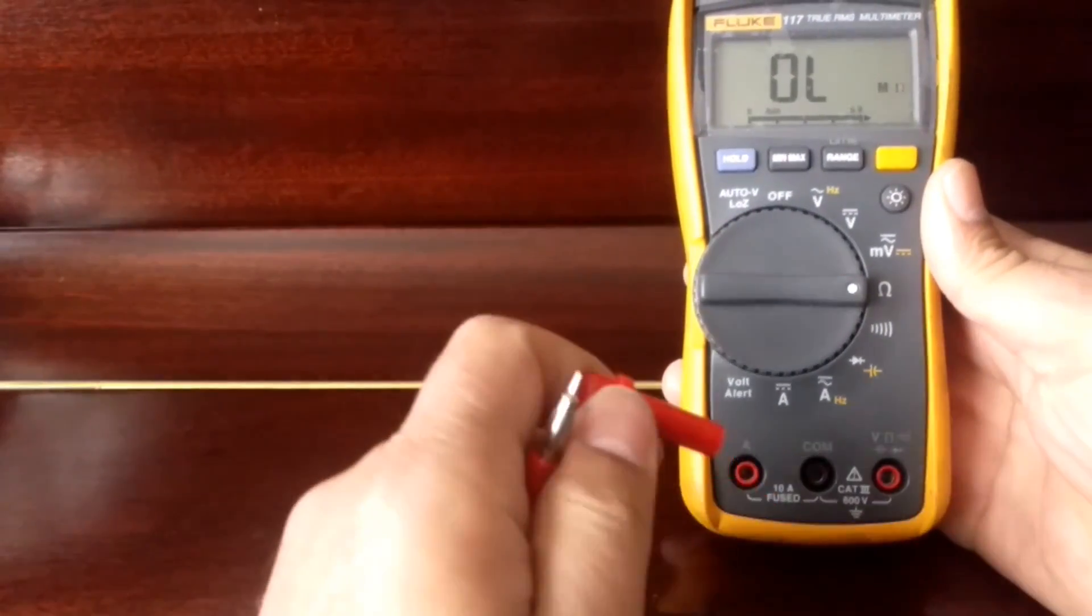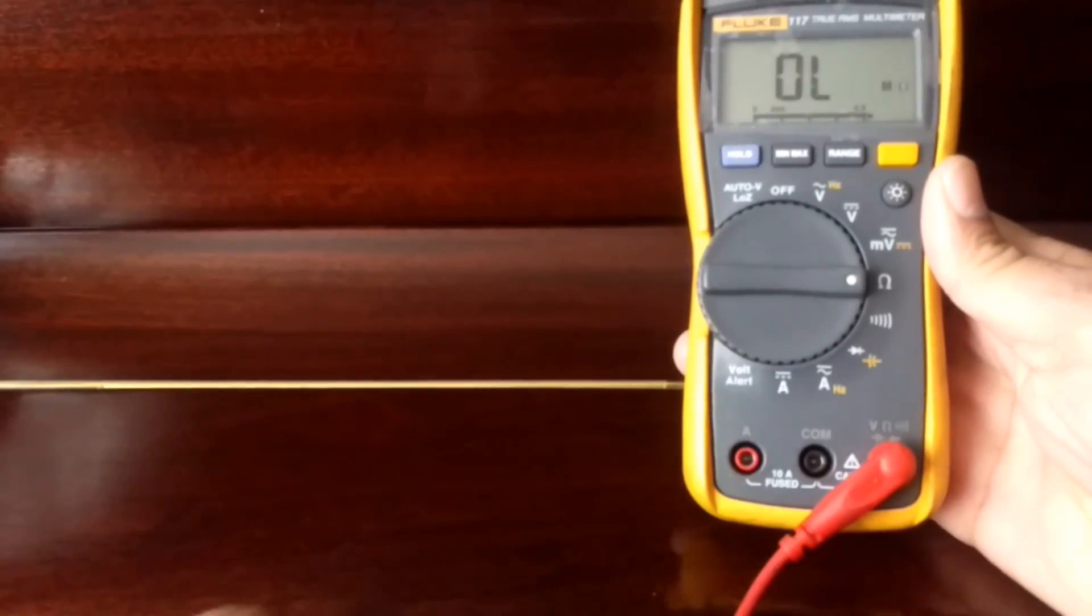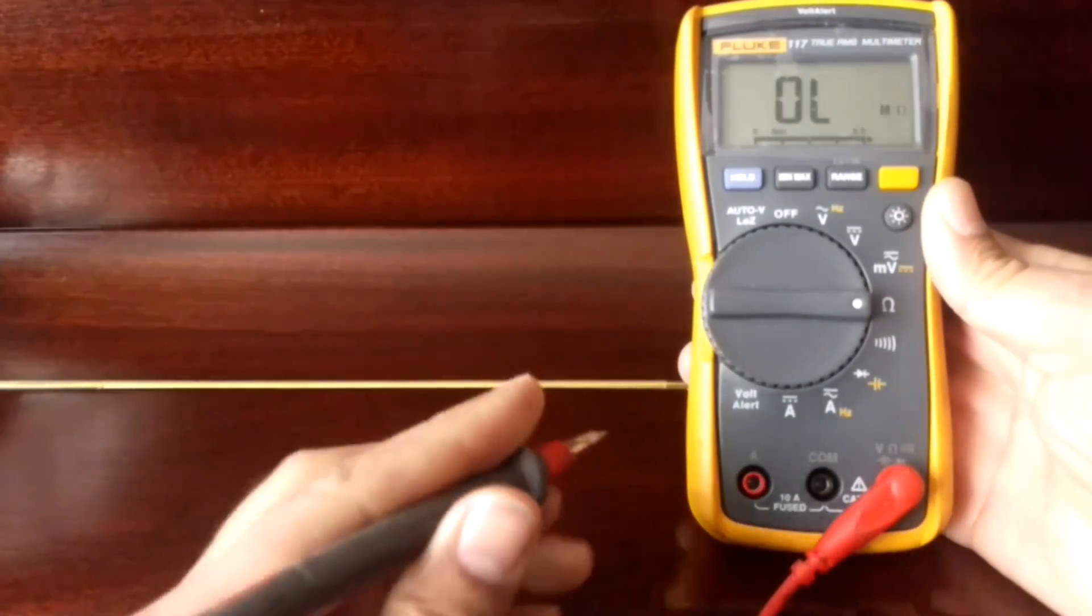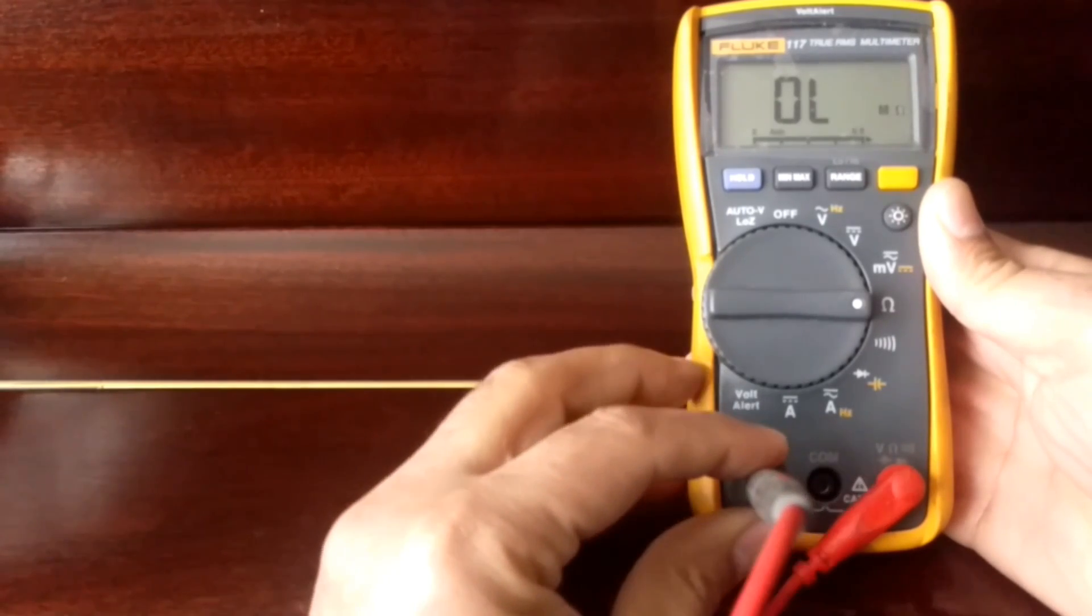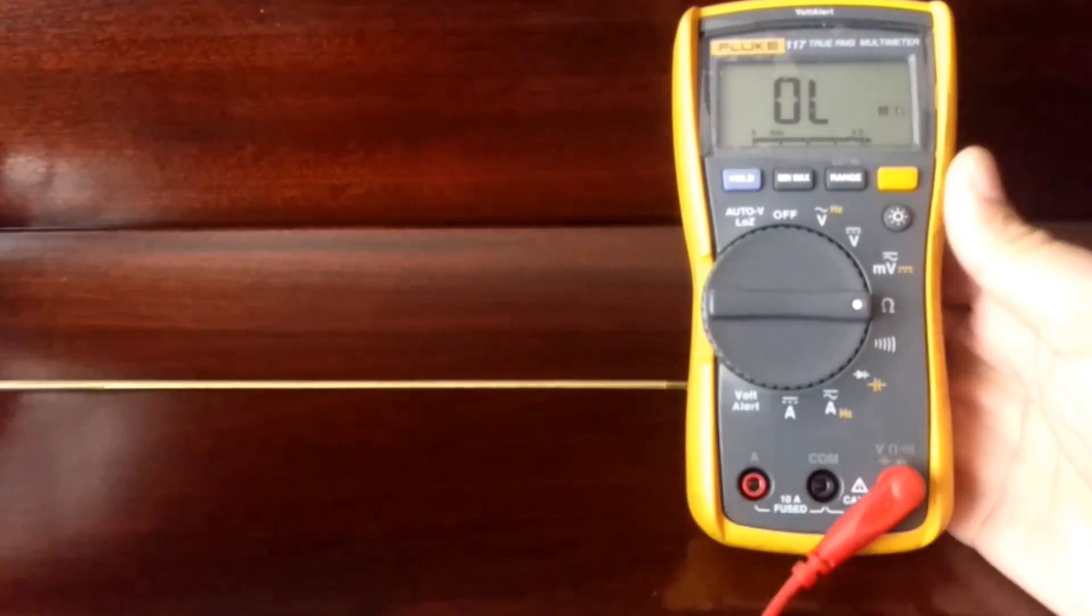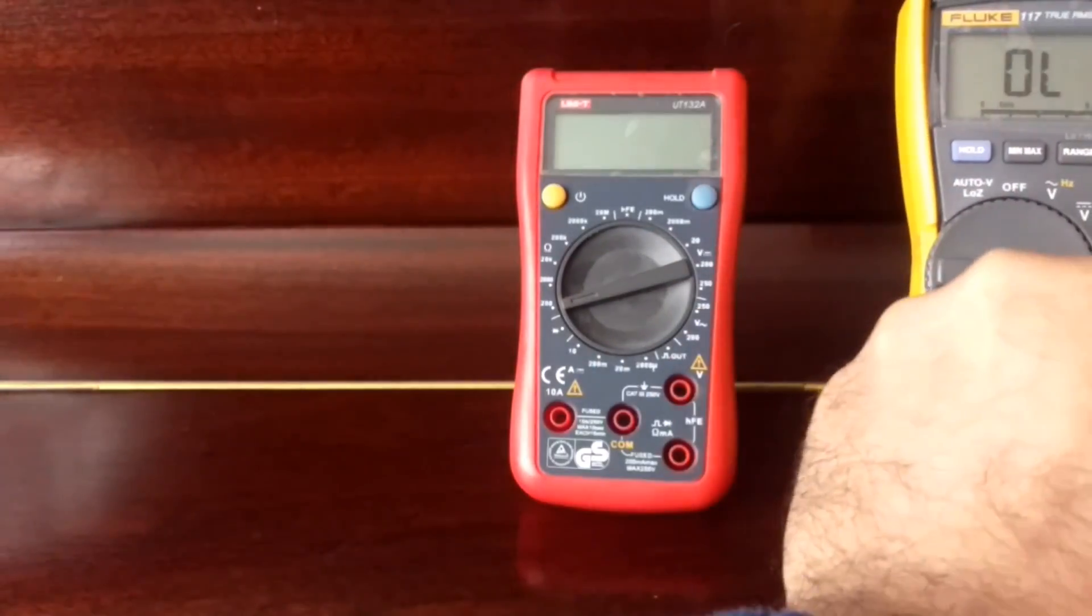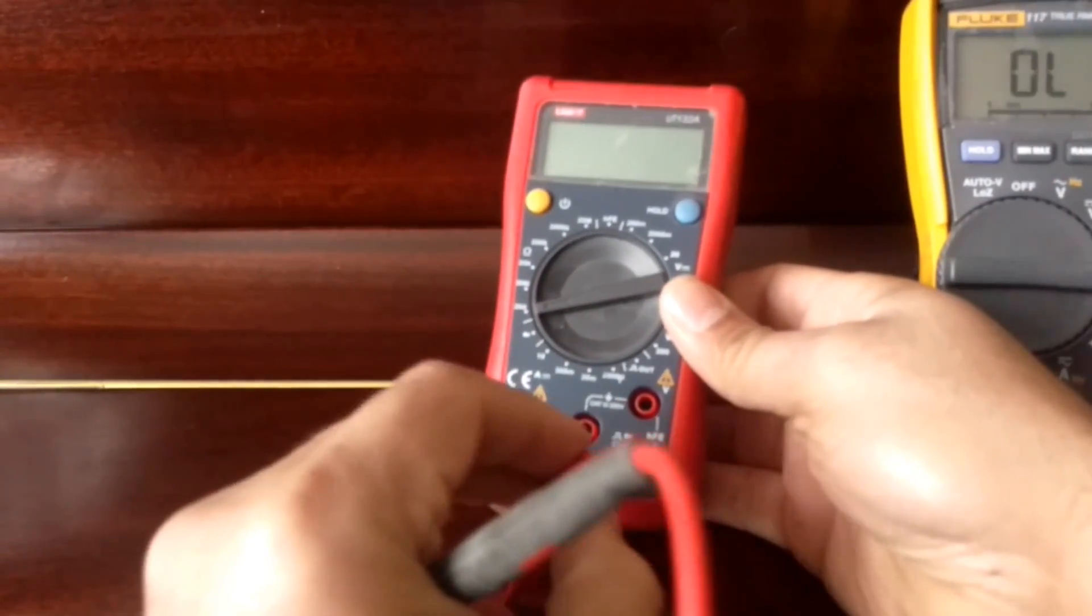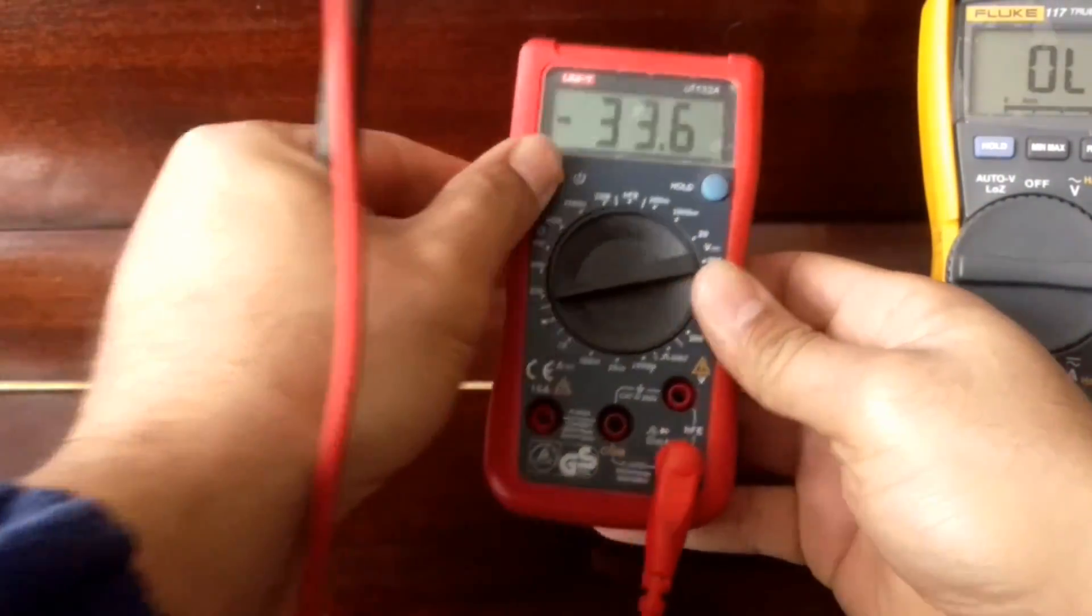A quick way to check the fuse on most multimeters is to put it onto a resistance setting. This saves you having to open up the meter. Put the red lead into your resistance plug socket and then just bridge the connection to the amp socket. And you'll see there's no connection. It says OL overload, which means there's no connection between the two. And that indicates the fuse is blown.